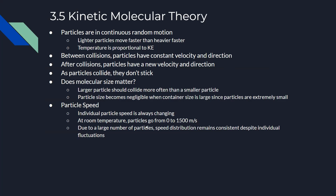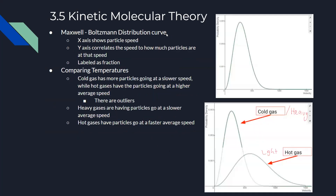Individual particle speed is always changing. At room temperature, particles can move from zero to 1500 meters per second. Due to the large number of particles, speed distribution remains consistent despite individual fluctuations. This is modeled by the Maxwell-Boltzmann distribution curve, where the x-axis shows particle speed and the y-axis shows the fraction of particles at each speed — demonstrating that particles are distributed across a range of speeds.